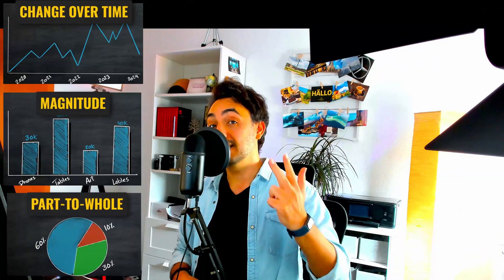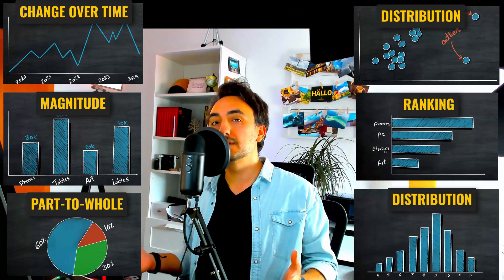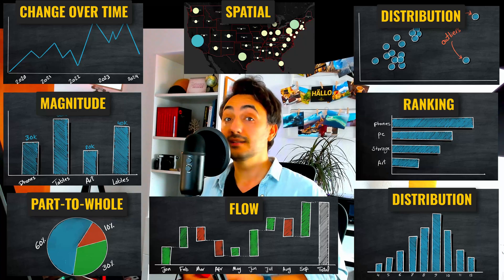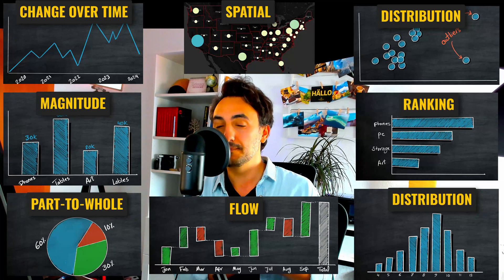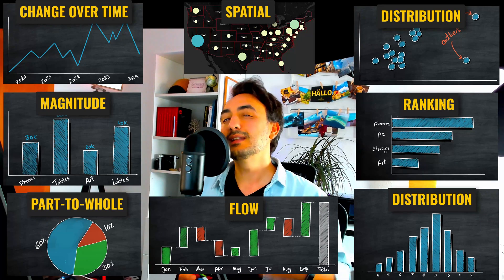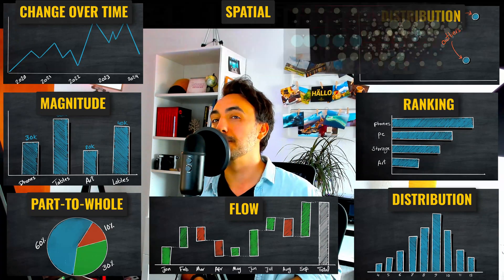That's why we're going to summarize and group all those charts under different categories: change over time, magnitude, part to whole, correlations, ranking, distribution, spatial, and flow. Each of those categories is going to focus on a specific question or problem in order to answer it using visualizations. Now let's go through all those categories one by one.